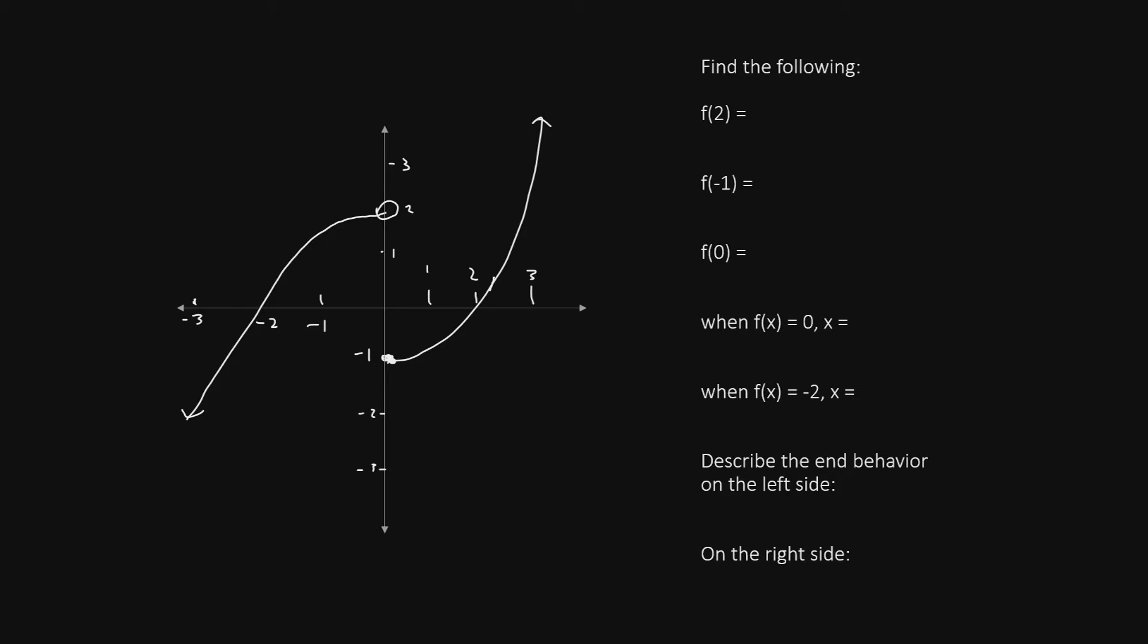Let's find the position on the graph where x is equal to 2. That will be here, and let's place a star on the graph at that point. Now we read the y value. The y value here is directly on the axis and that's zero, so we can say f(2) is 0.